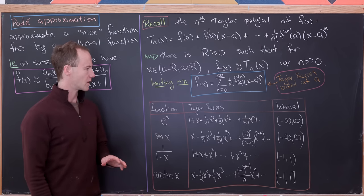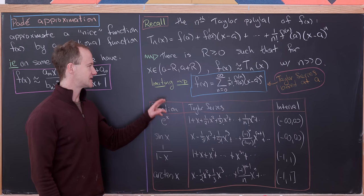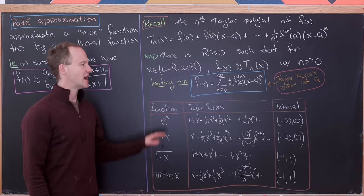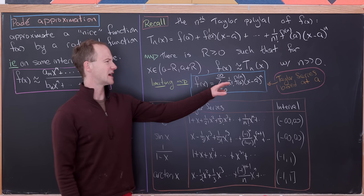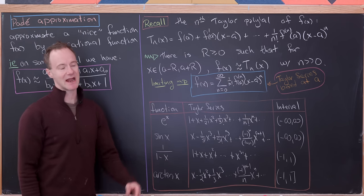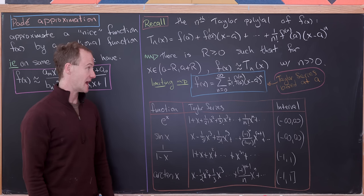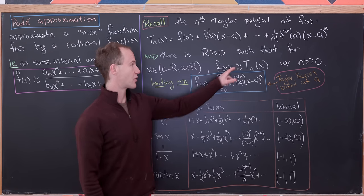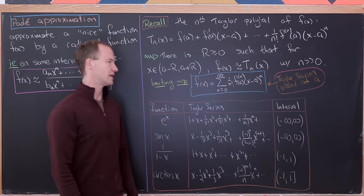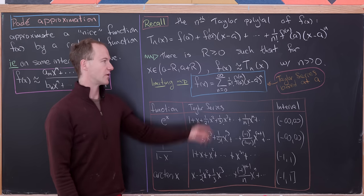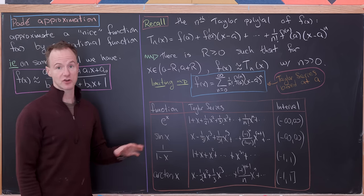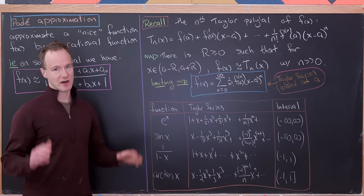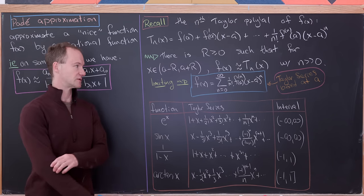Furthermore, if we take the limit, the Taylor polynomial turns into a Taylor series based at a (or centered at a). In this setup, we don't just have approximate equality — we have equality: the right-hand side converges to our original function, provided we have a nice enough original function.